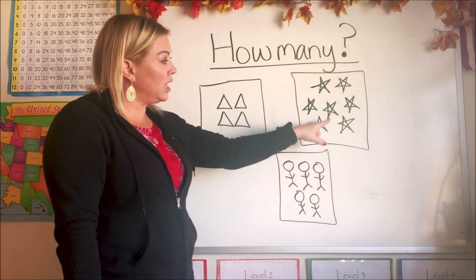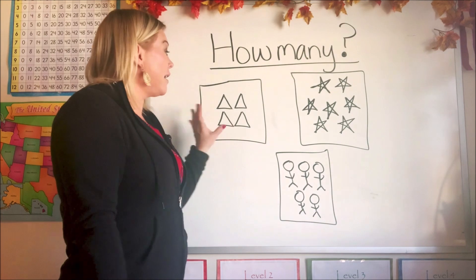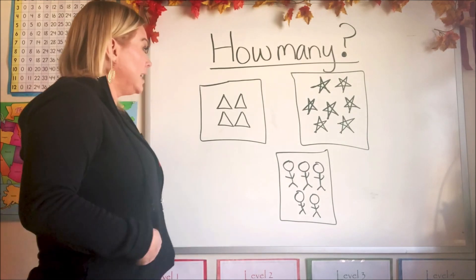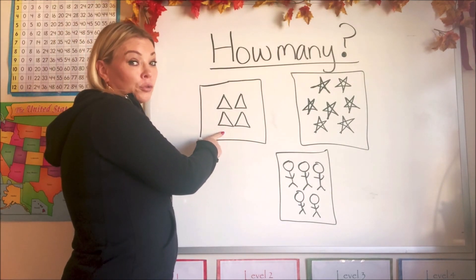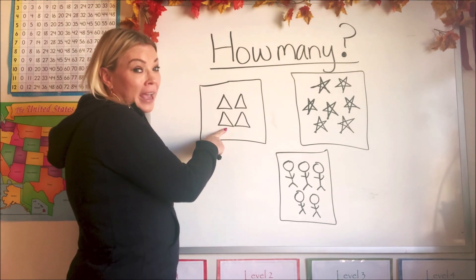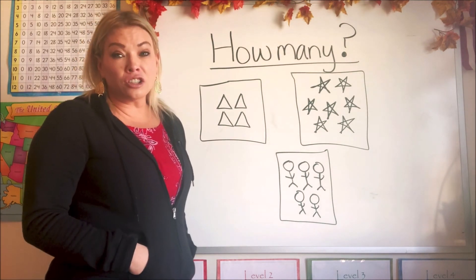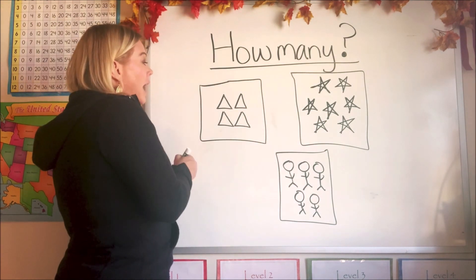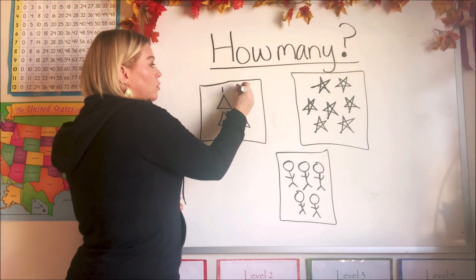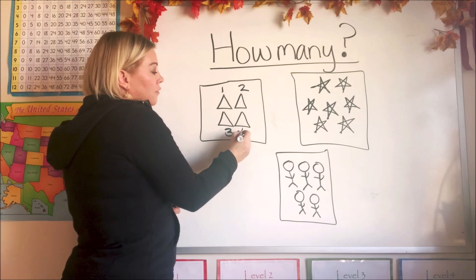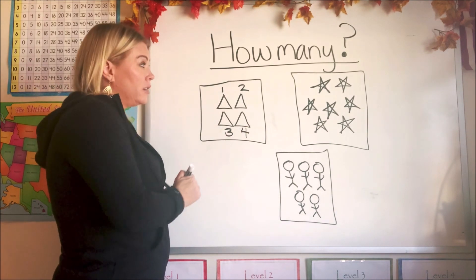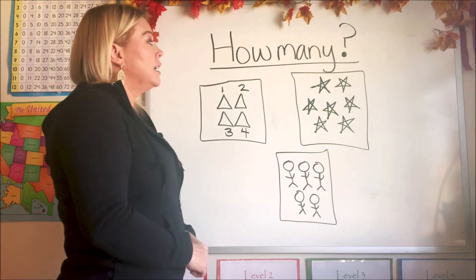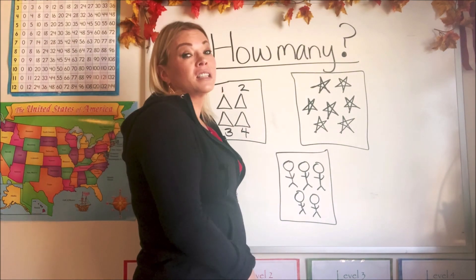Today I put three groups or sets of items on my board. Do you know what these items are? In this first box we have a group or a set of triangles. How many triangles do we have in this set? Let's count them. We have one, two, three, and four. We have four triangles in this group. Okay, let's see what's in the next group. In this group we have stars.